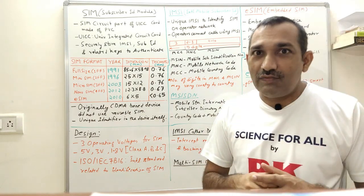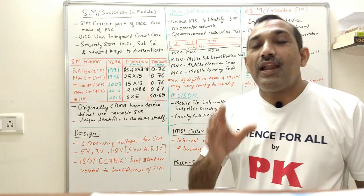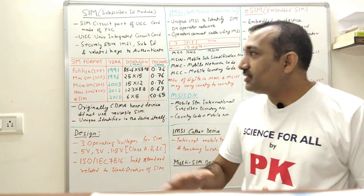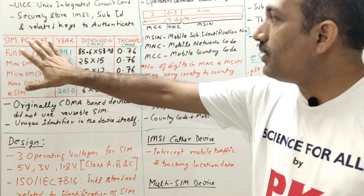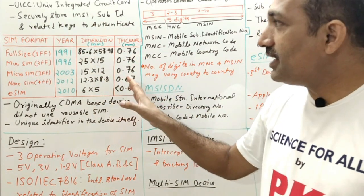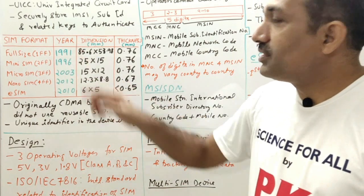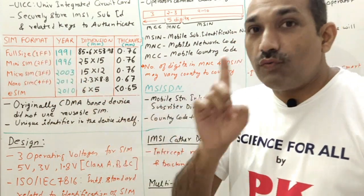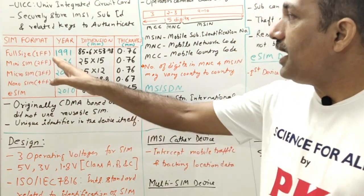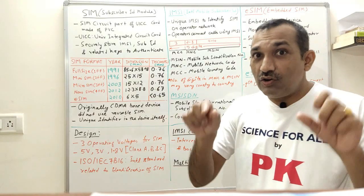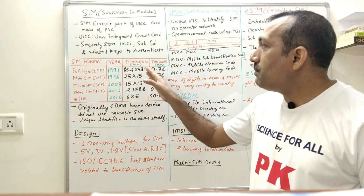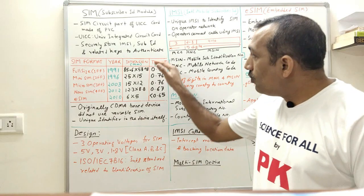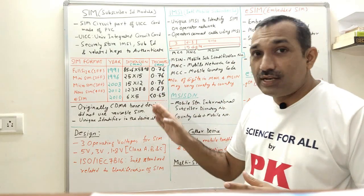The SIM card was not always in its current form; it has gone through a lot of changes over time. The first SIM card was introduced in 1991 and was called full-size or 1FF. Its dimensions were very big — like a credit card — 85 mm by 54 mm, with a thickness of 0.76 mm.